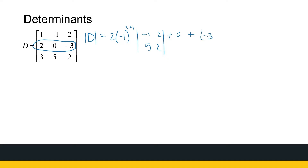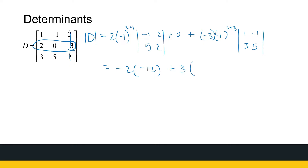Then plus minus 3 times minus 1 to the power of row 2 plus column 3, which is 2 plus 3, times the determinant of the submatrix with entries 1, minus 1, 3, 5. That gives minus 1 to the power of 3, which is minus 1. So we have minus 2 times minus 2 minus 10, giving minus 12, plus 0. Then minus 1 to the power of 5 is minus 1 times minus 3, giving plus 3 times 5 minus minus 3, which is 8. So we get 24 plus 24, which is 48.